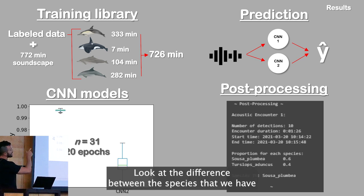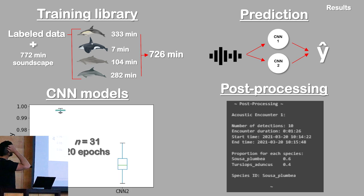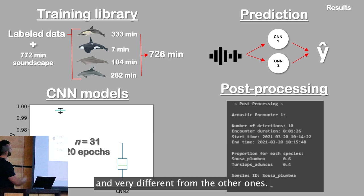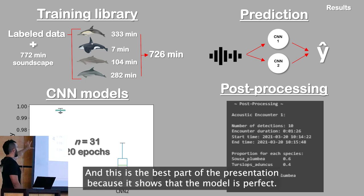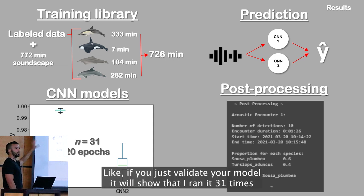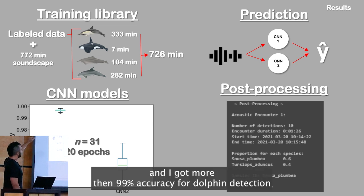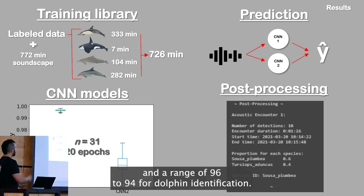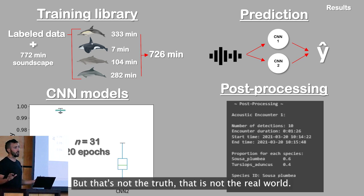Looking at the results and the difference between species, we have just seven annotations from killer whales, which is very different from the other ones. This is the best part of the presentation, because it shows how the model can appear perfect. If you just validate your model internally, you can show something like — I ran it 31 times and got more than 99% accuracy for dolphin detection, and a range of 94 to 96% for dolphin identification. But that's not the real truth — we only validated the model on our own data.